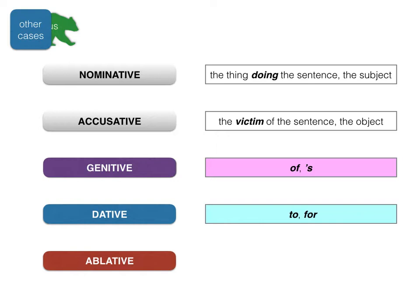The dative case is used when you want to say 'to' or 'for' — for example, 'I gave some money to the headmaster' or 'I did it for a friend', so the headmaster or the friend are dative. The ablative case is used for 'with' or 'by' — for example, 'he was killed by the plague' (plague is ablative) or 'I hit him with a stick' (stick is ablative, because it follows the word 'with').